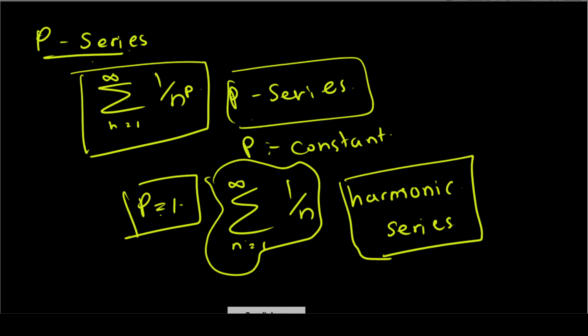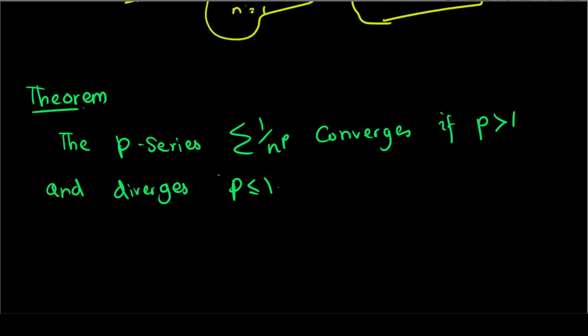So we will talk about one thing: here we call it the P-series. The P-series is always 1 over n to the power P.